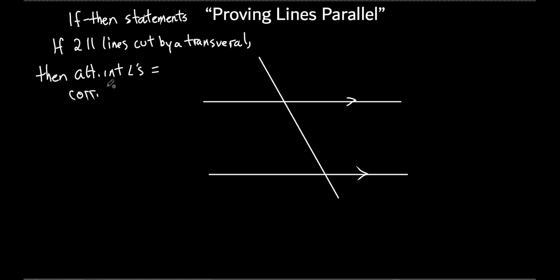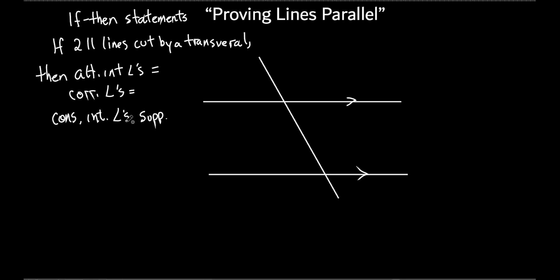You could say the corresponding angles are equal. You could also say the alternate exterior angles are equal to each other. And then one more - not equal but the consecutive interior angles are supplementary. So all the others - alternate exterior, alternate interior, corresponding - they're all equal to each other. The only things that are not equal are the consecutive interior angles.